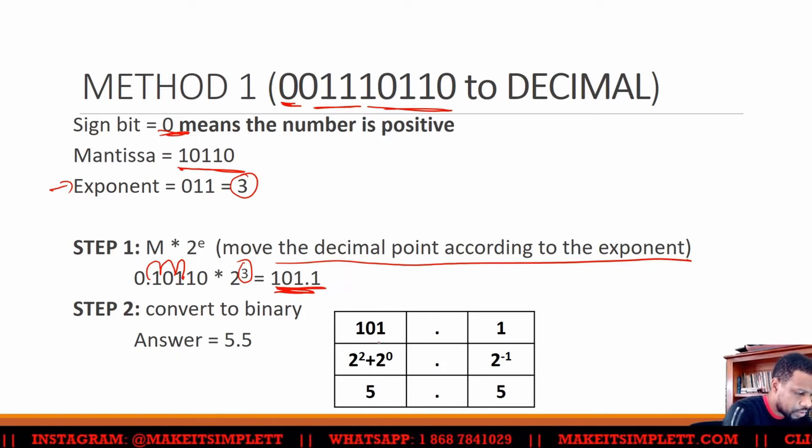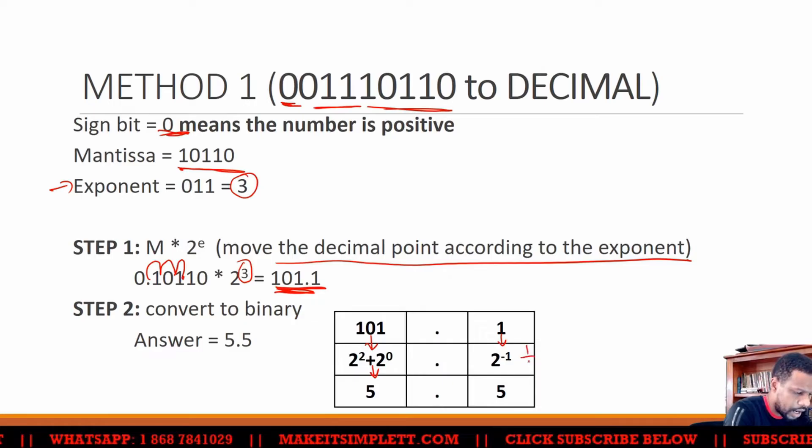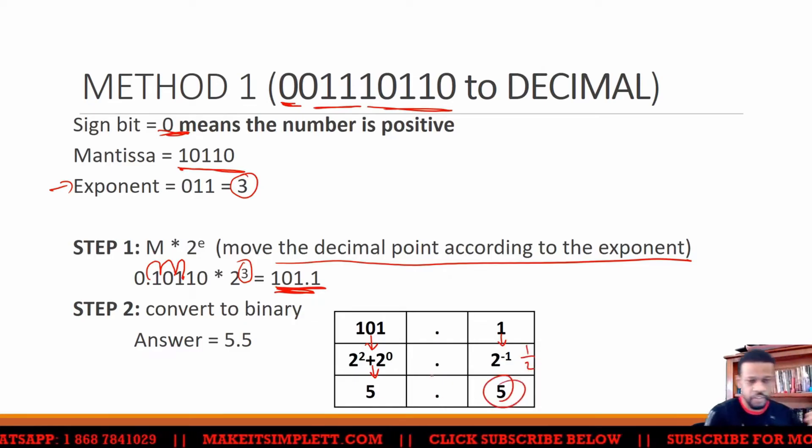Then you have to convert the 101, which is basically true normal conversion of 5. And this 1 here is 2 to the minus 1, which will give you a half, which is 0.5. So you get 5.5.